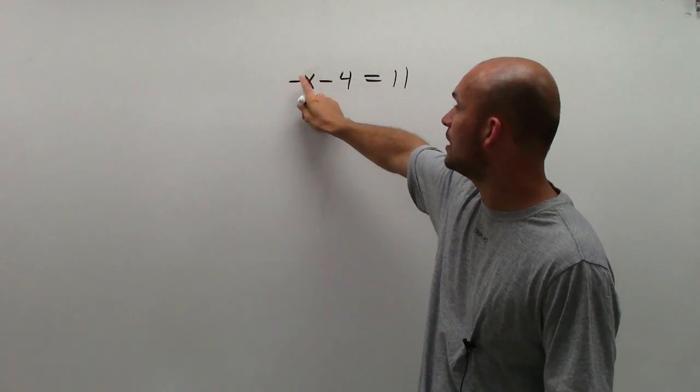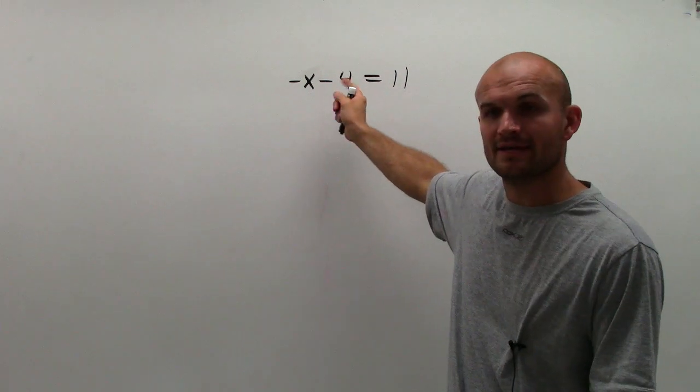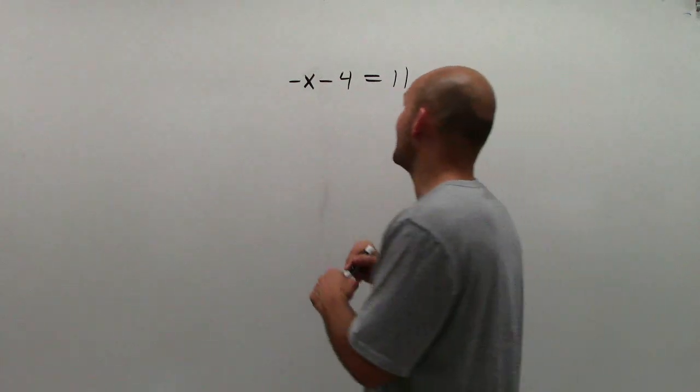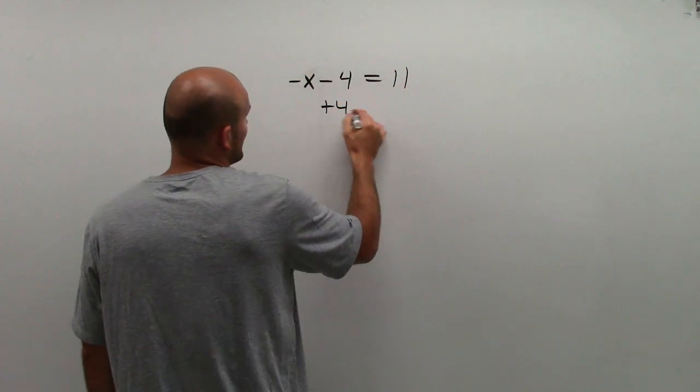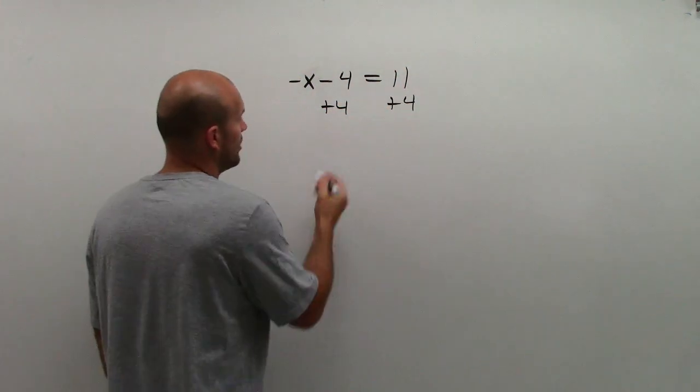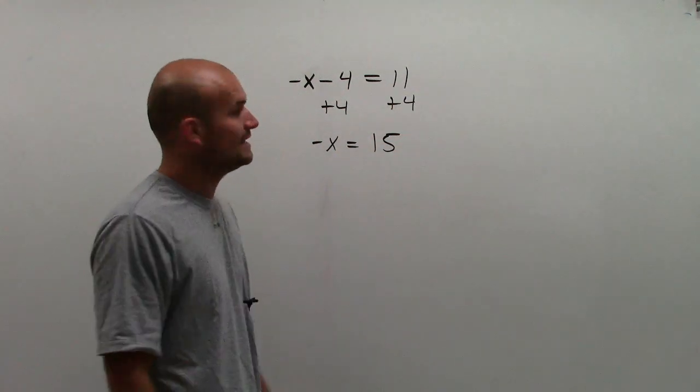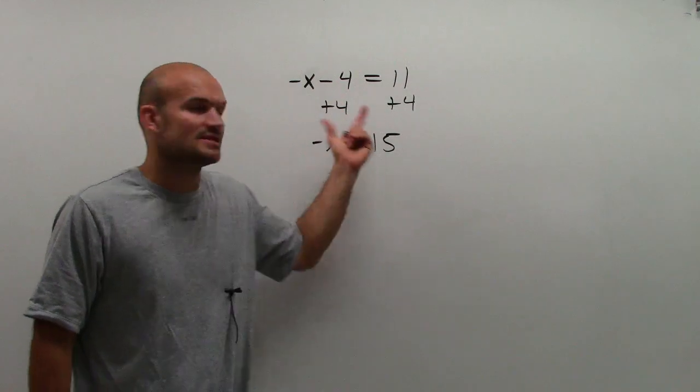So right now I have negative 4, or I'm having x being subtracted by 4. So I need to undo that by adding a 4. And I'm going to add a 4 on both sides by the addition property of equality. So I have negative x equals 11 plus 4 is 15. Remember negative 4 plus 4 goes to 0.